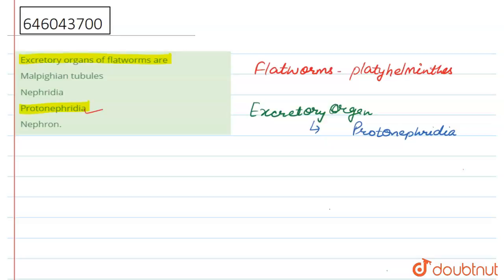Option first is malpighian tubules. This one is a characteristic of arthropoda, so this one is wrong.